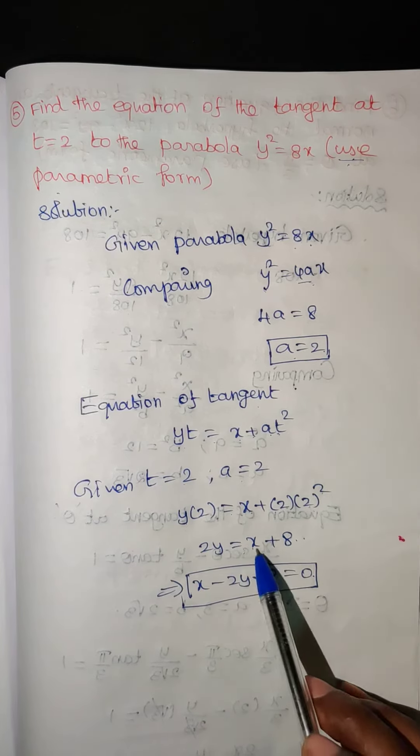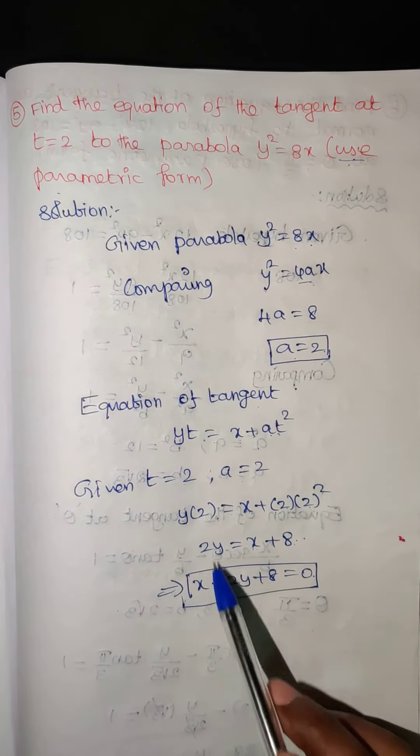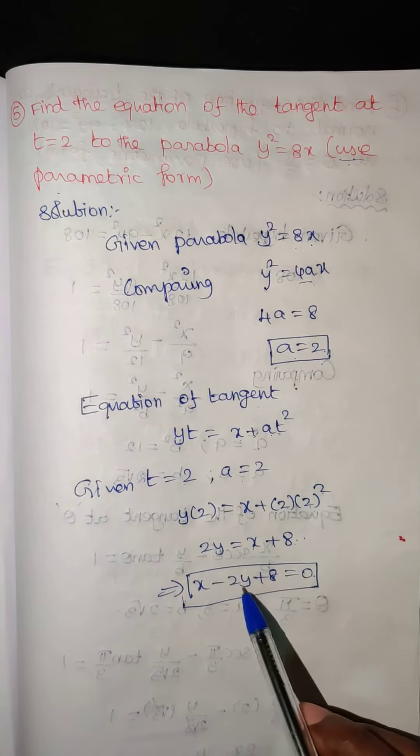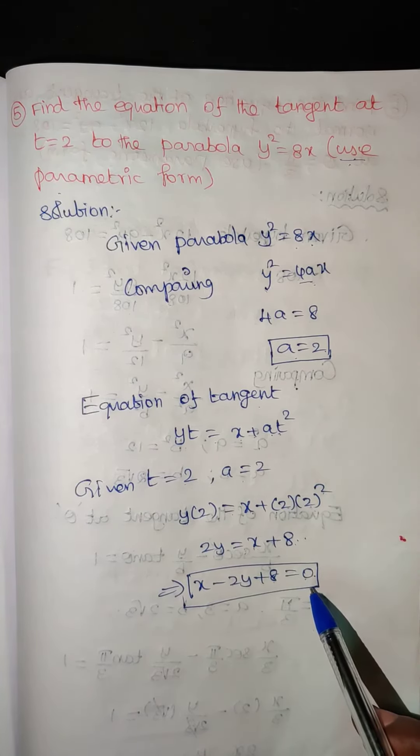So 2y equals x plus 8, then I am going to take 2y to the right hand side: x minus 2y plus 8 equals 0. So this is the equation of tangent.